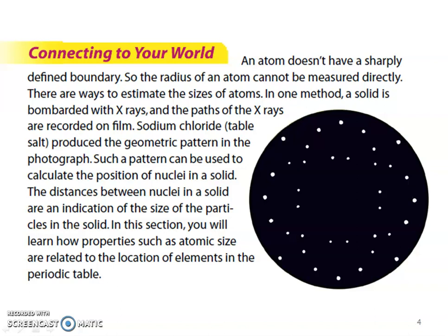An atom doesn't have a sharply defined boundary, so the radius of an atom cannot be measured directly. There are ways to estimate the size of atoms. In one method, a solid is bombarded with X-rays, and the paths of the X-rays are recorded on film. Sodium chloride, also known as table salt, produces the geometric pattern in the photograph. Such a pattern can be used to calculate the position of nuclei in a solid.